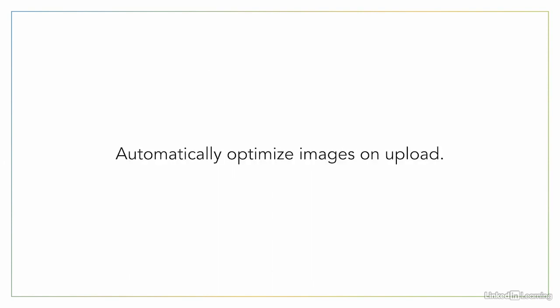When I'm working on my own site, I can export images from an image editing program and upload them directly. But WordPress is great because it can be used by anyone, including people that don't have image editing programs. So you really want to install a plugin that'll automatically optimize images upon upload. This is different than automatically resizing images, which WordPress does by default. Optimizing images means reducing the file size, similar to those JPEG quality levels.